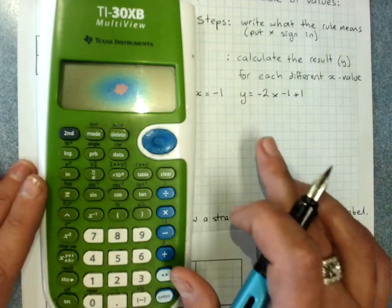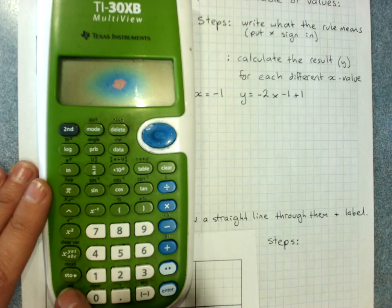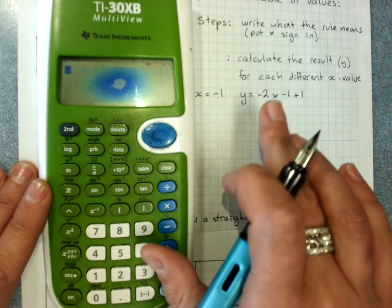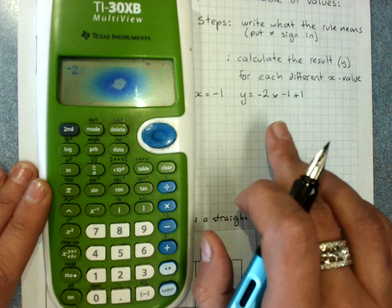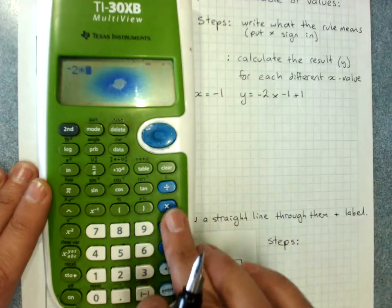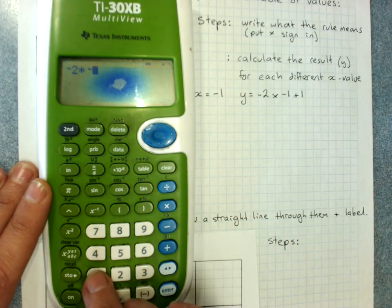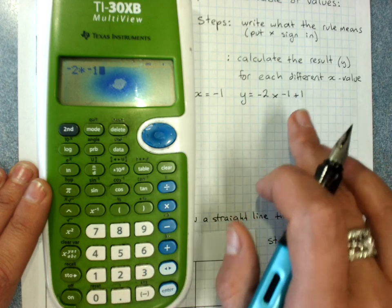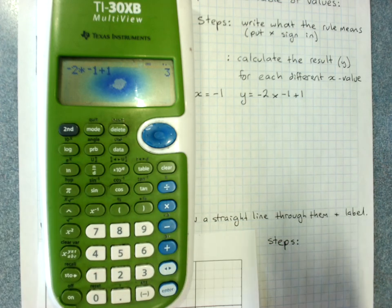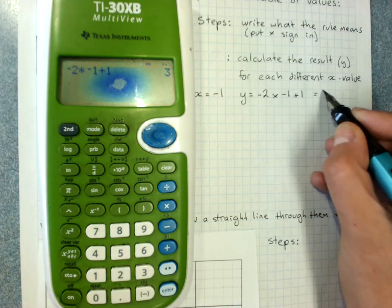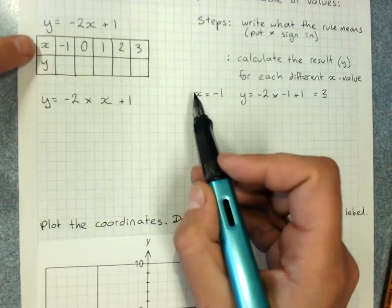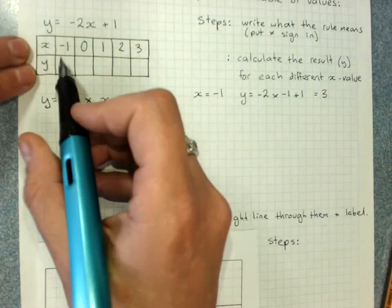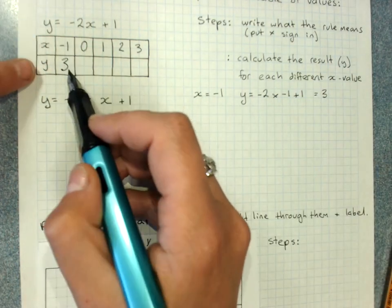So negative means I'm going to have to use the negative key. Negative 2 times negative 1, then plus 1 equals 3. And then where x is negative 1, we put 3 as our y value.